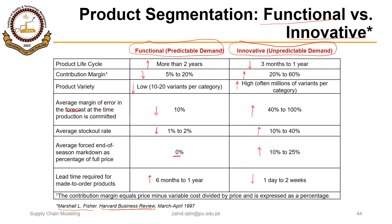To better understand these two types of products, you can keep common examples in mind — something like a ceiling fan for functional products and a smartphone for innovative products. These examples help illustrate the different factors distinguishing the two categories.